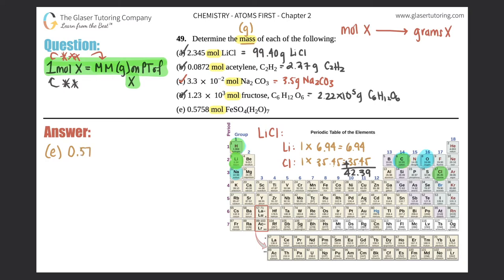E: 0.5758 moles of FeSO4·H2O7. Okay, so times by the ratio: moles of FeSO4·H2O7 on the bottom, grams of FeSO4·H2O7 on top. And now we're using the information that we found out before, right? One mole of anything equals the molar mass.